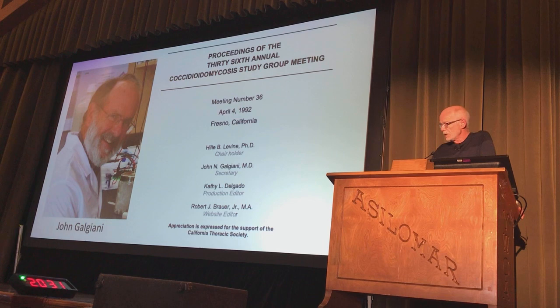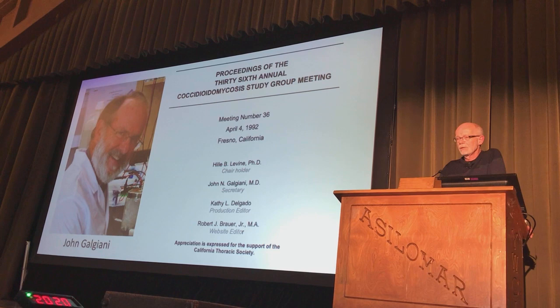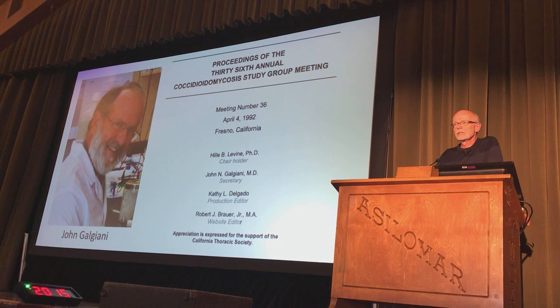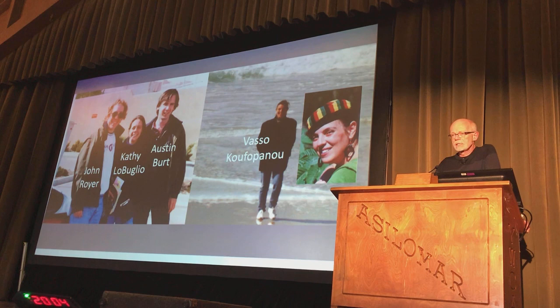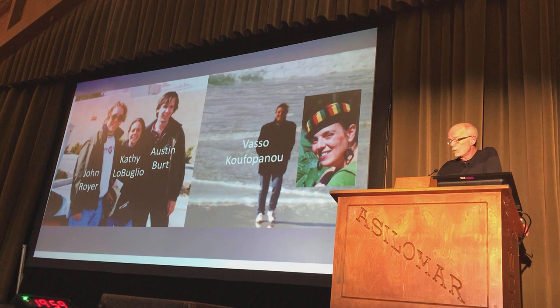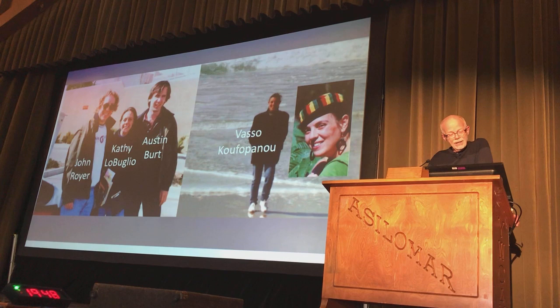That publication caught the attention of John Galgiani, and he drove to Berkeley and then drove me to Fresno to attend my first Coccidioides study group meeting. For me it was great because Galgiani had cultures in his lab. That led to another grant proposal to study population genetics of Coccidioides. Austin Burt and Vaso Kofopano, evolutionary biologists from Santa Cruz, were attracted to that project.